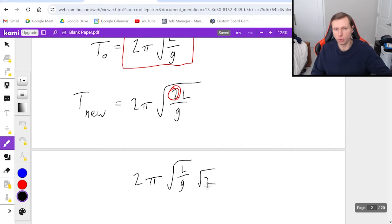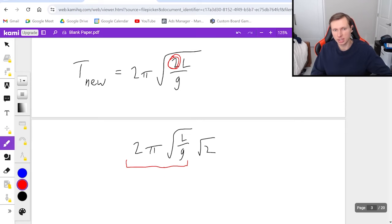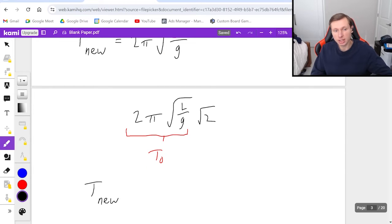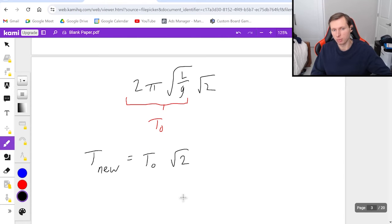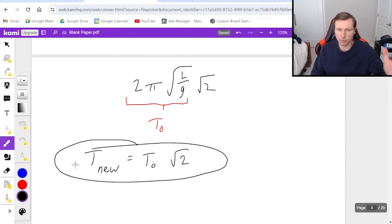The reason why I did that is because this quantity is equal to T naught. It's my original. And so that means my new period is equal to T naught, the original, times the square root of 2, which you can plug in a calculator. It's about 1.4, meaning the period got longer. With a longer pendulum, it takes longer to swing back and forth.